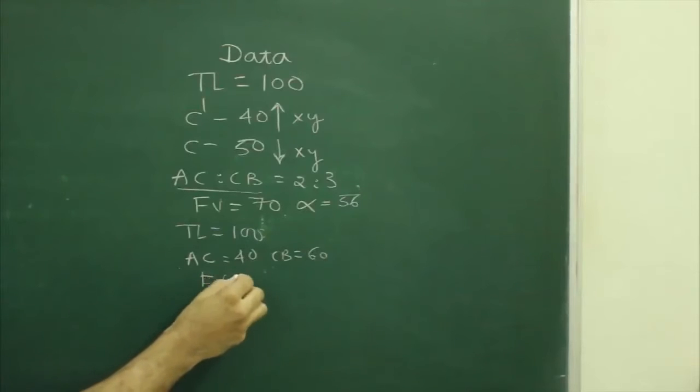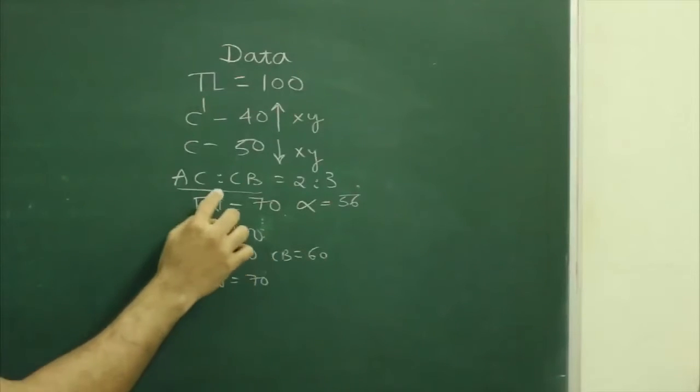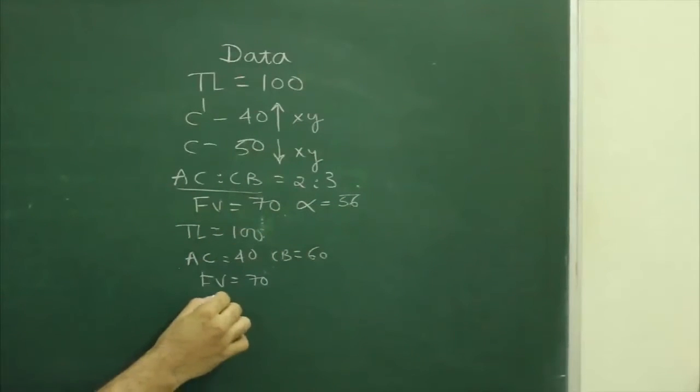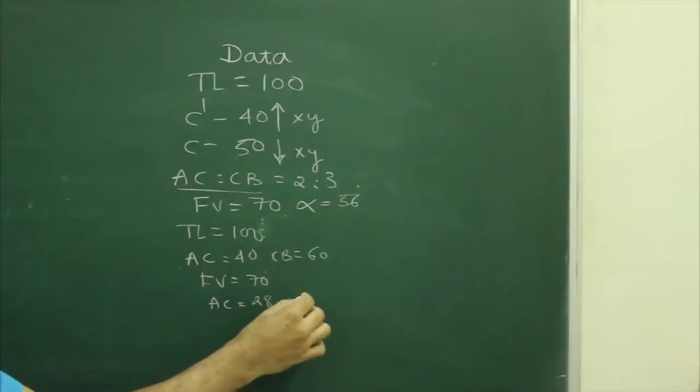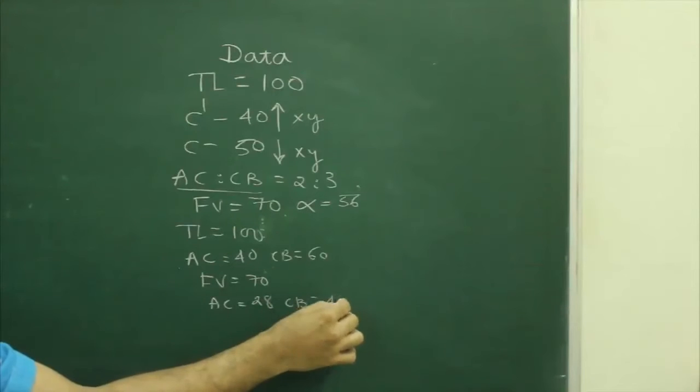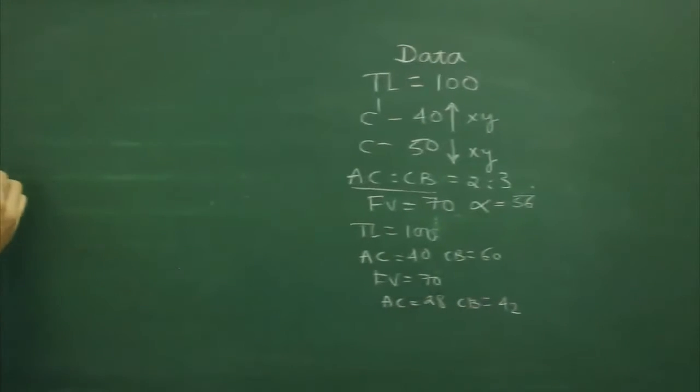Same way, front view is 70, so if you divide into 2 is to 3, then A to C would be 28 and C to B would be 42.